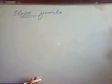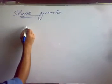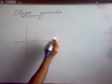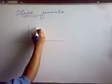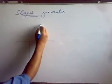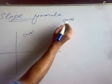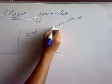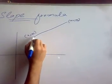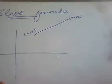First of all, to derive the slope formula, let us consider two points. One is x1, y1 and the other is x2, y2. And we want to calculate the slope between these two points.